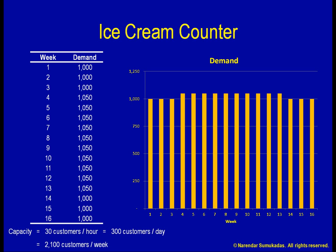For an ice cream counter, however, using a weekly time window for matching my demand and capacity is totally inadequate. Here, it is the peak demand that I need to plan for, not the average weekly demand. Even though I have enough weekly capacity to meet my weekly demand, my daily capacity is insufficient to keep up with the day-to-day demand fluctuations. On some days, I have ample capacity, whereas on other days, I am turning away customers. So, let me look at the day-to-day demand fluctuations.